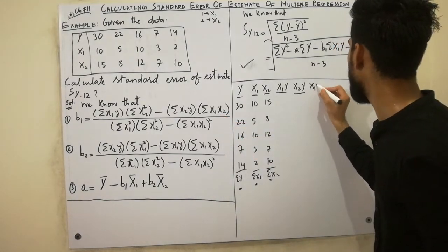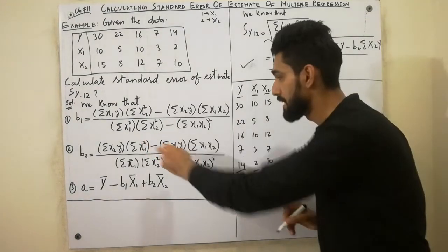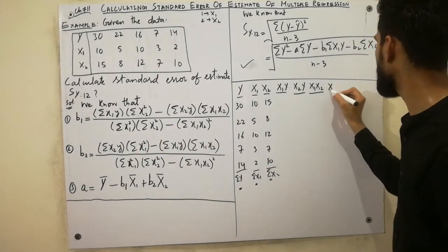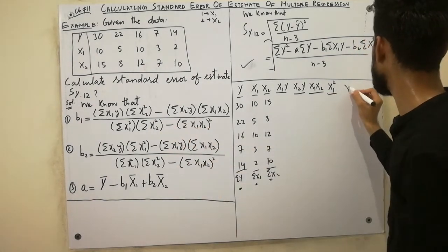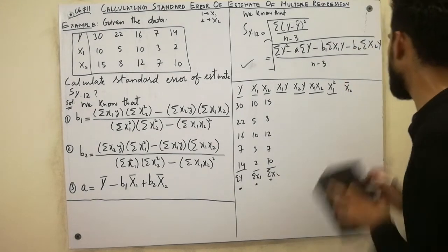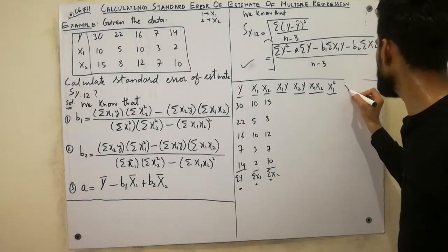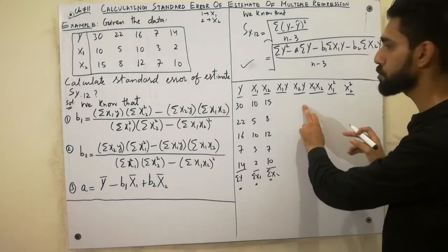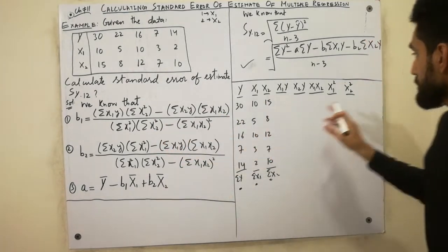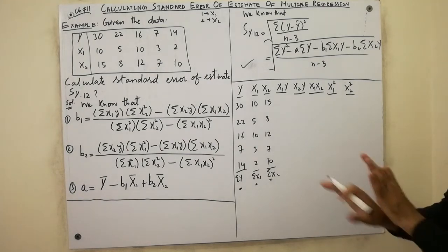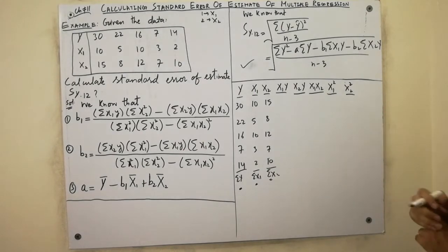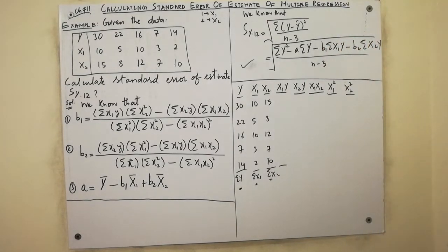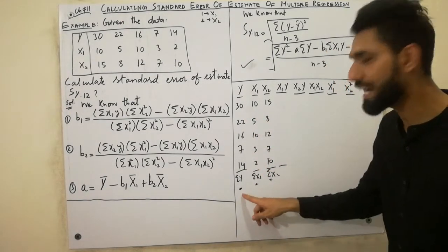We have to calculate x1x2, x1y, x2y, x1², and x2². We take the sums from the calculator. First of all we add up the y values to get summation y.